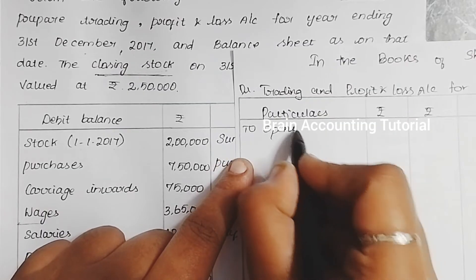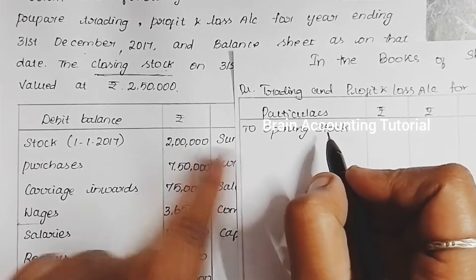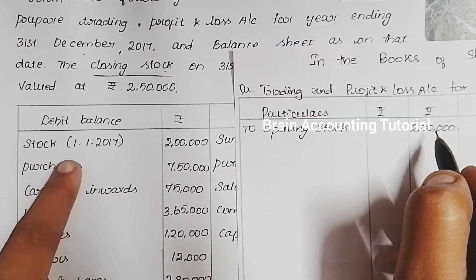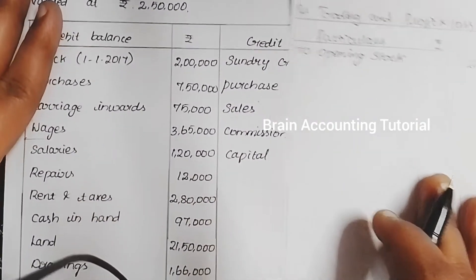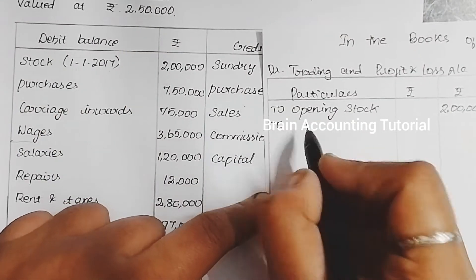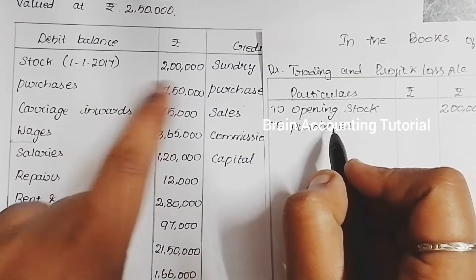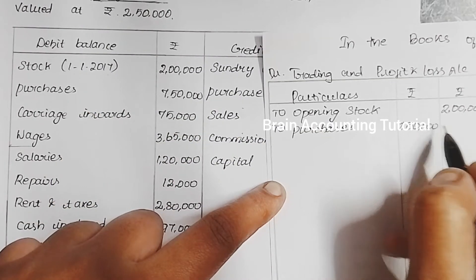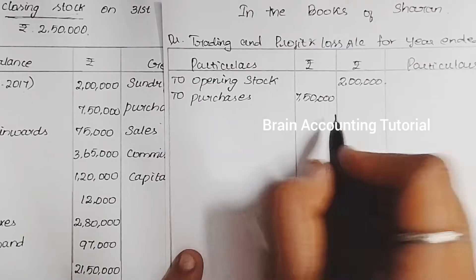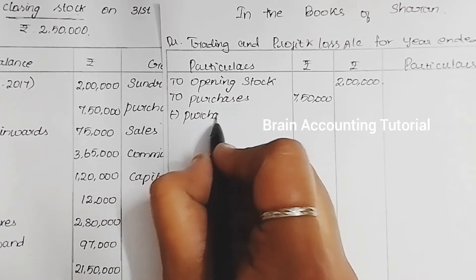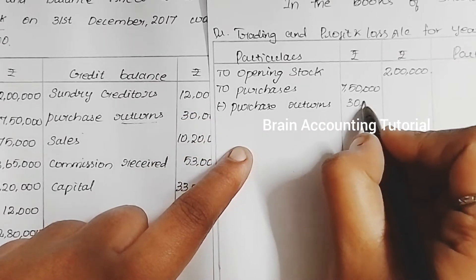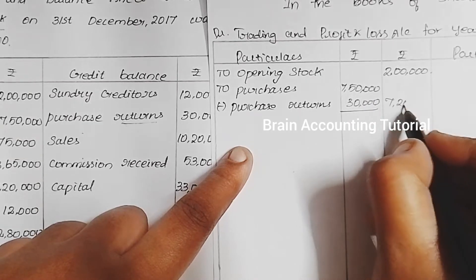Opening stock is 2 lakh rupees. Next, purchases: we have 7,50,000, and we subtract purchase returns. Purchase returns is 30,000, so 7,50,000 minus 30,000 equals 7,20,000.